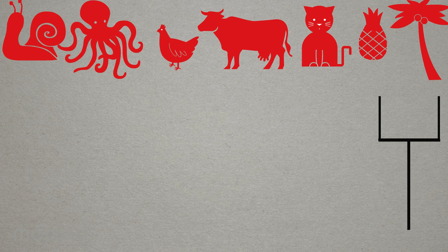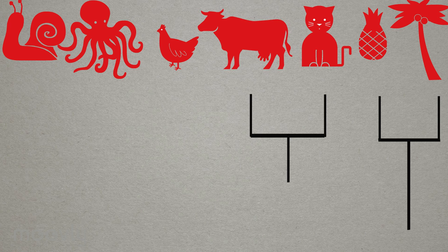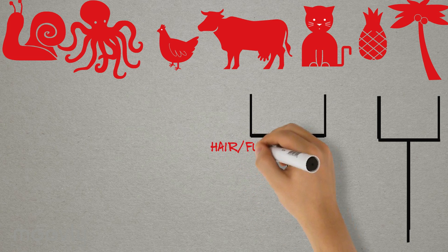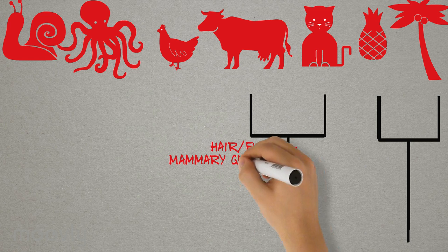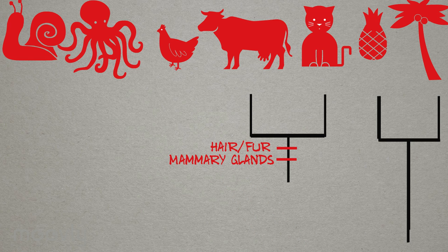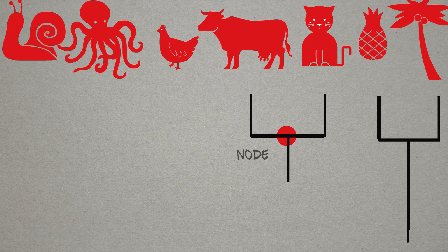Next, we can group the cat and the cow together. They also share many traits not found in other organisms, like hair and mammary glands, which we can represent here in the phylogeny. Because they exclusively share a node, we say that they are sister species.